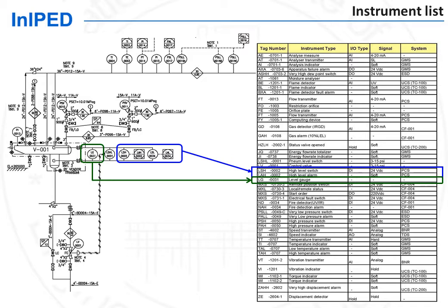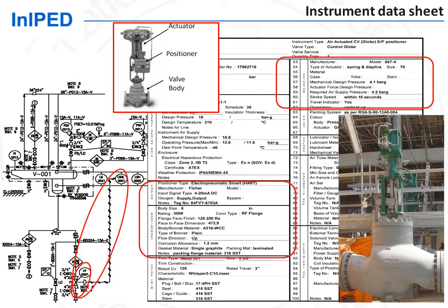The process data sheet of a control valve, for instance, shows the functional requirements, which is the operating range — the extreme operating cases — as well as the maximum differential pressure for sizing of the actuator and the fail-safe position. The instrumentation discipline complements this process information with mechanical, as well as electrical and instrumentation information.